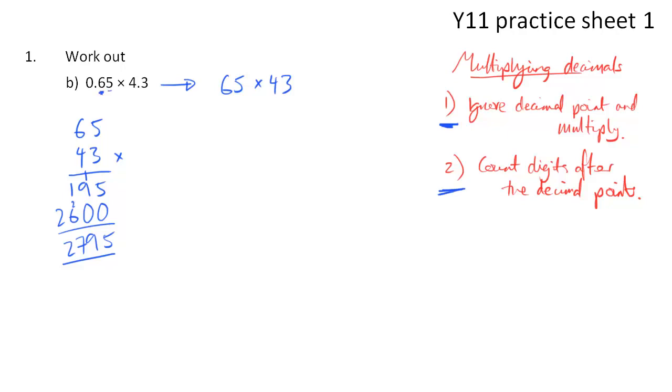So the sum without any decimals is 2,795. But let's count the digits. We've got the 6, the 5, and the 3, so a total of 3 digits after the decimal point is what we require. So if I look at my number 2,795, I need the 5, the 9, and the 7 to be after the decimal point. So I put it there, and there's my answer, 2.795.